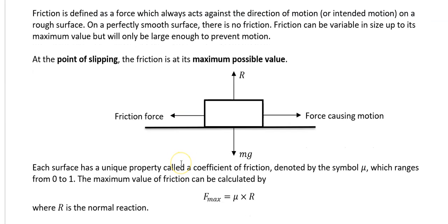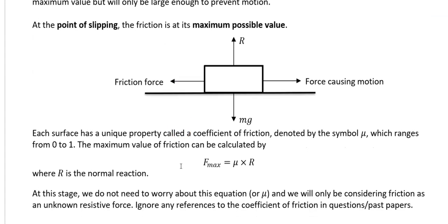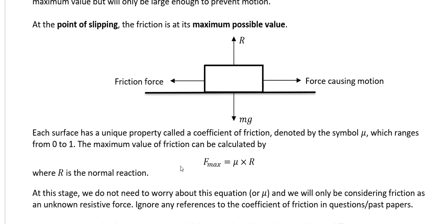You will see this more at A level mathematics, but this is what's called the coefficient of friction. So your f_max, the maximum value of friction you can have, is equal to μ times R, where μ is the coefficient of friction.